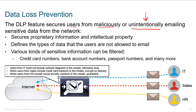DLP is something that we can leverage — we're talking about the ESA here — but it's something we can leverage in other solutions as well. What we're trying to screen for, coming back to unintentionally, are people accidentally and unintentionally disclosing credit card numbers, bank account numbers, passport numbers, etc.